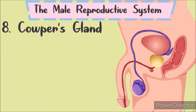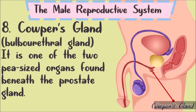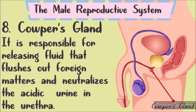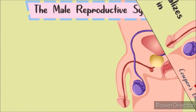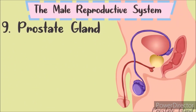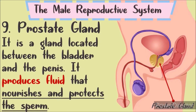Number 8: Cowper's Gland, also called the Bulbourethral Gland. It is one of two pea-sized glands found beneath the prostate gland. It is responsible for releasing fluid that flushes out and neutralizes acidic urine in the urethra. Last is the Prostate Gland, located between the bladder and the penis. It produces fluid that nourishes and protects the sperm.